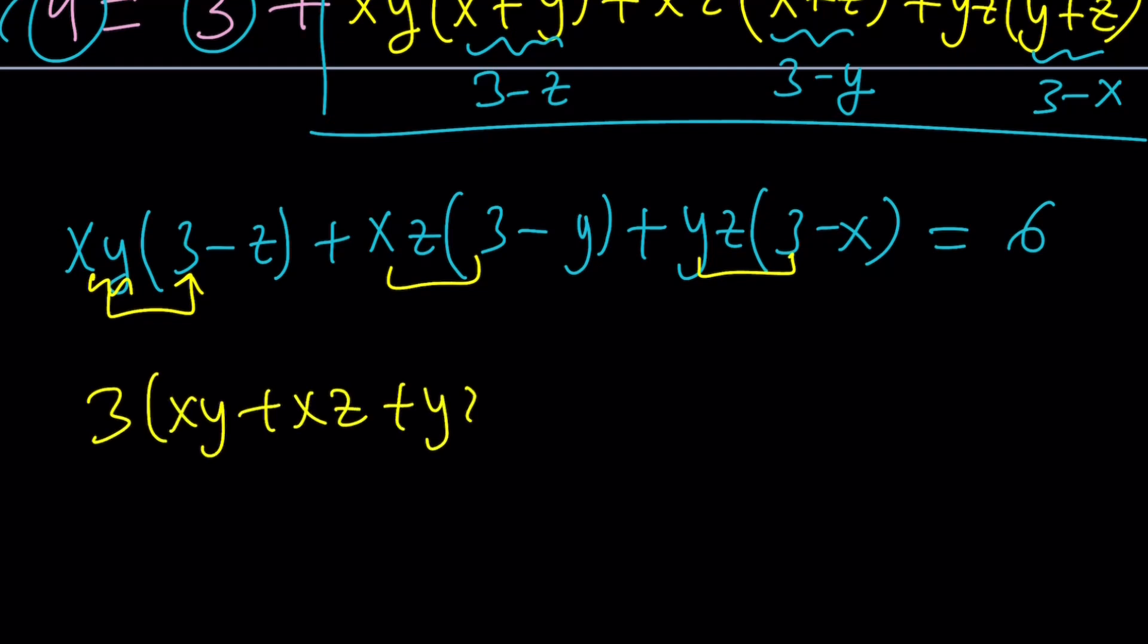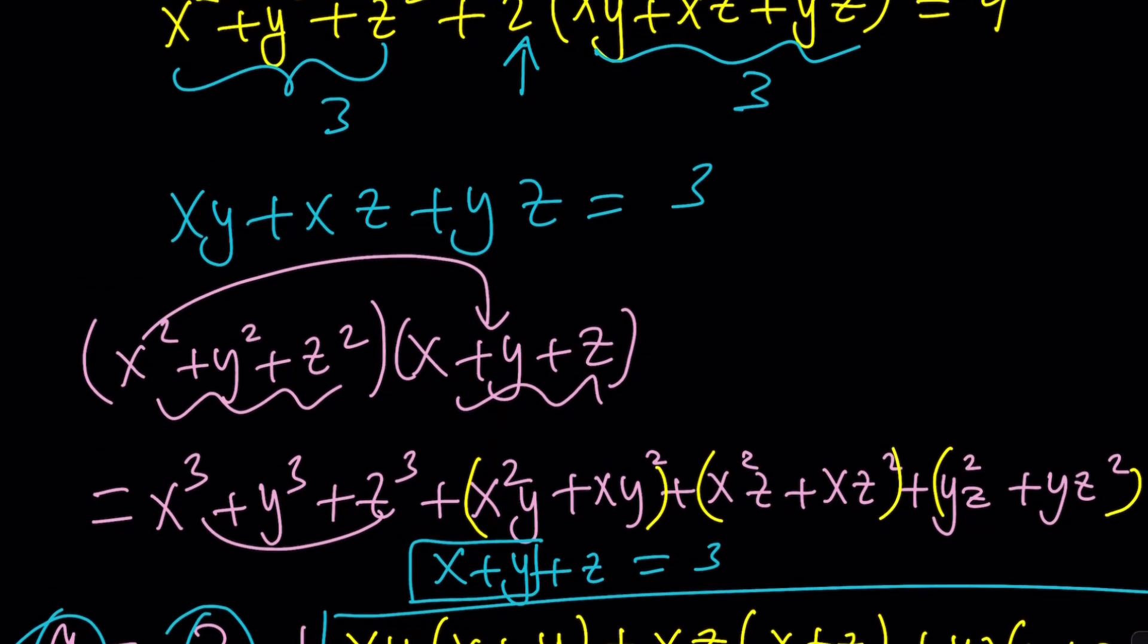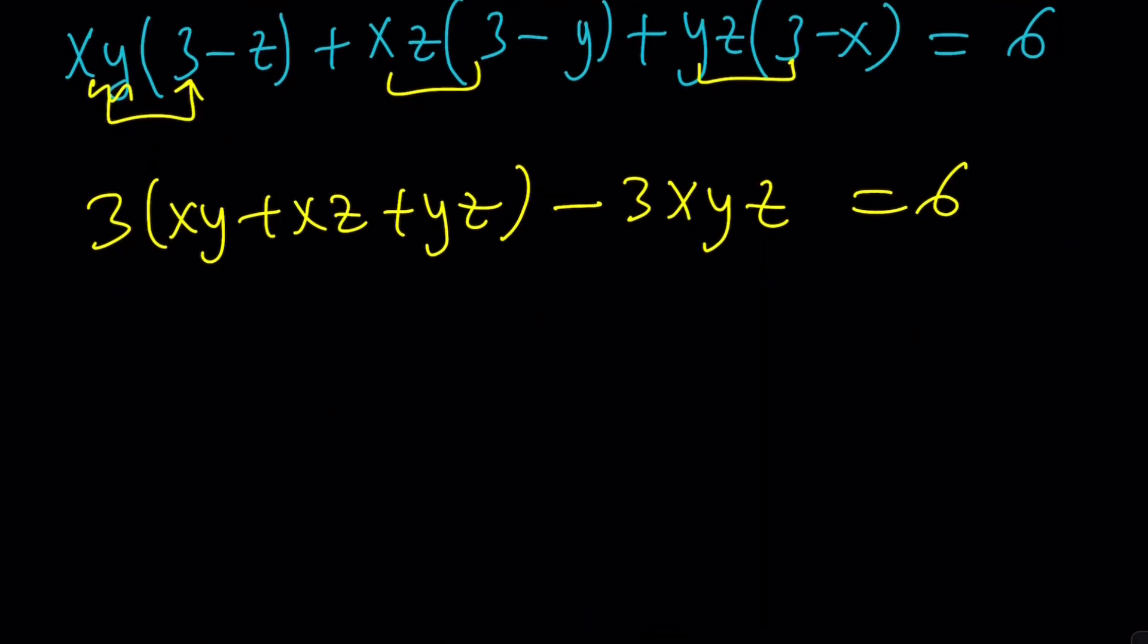And then minus, we're going to get the xyz three times. That's interesting. Does that look familiar? Somewhat. Now remember, we found that xy plus xz plus yz is equal to three, right? So this is equal to three. Three times three is equal to nine. Nine minus what equals six? The answer is three. So xyz is equal to one. Beautiful. So this gives us xyz equals one.